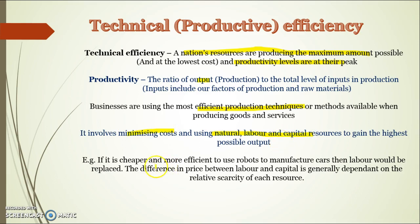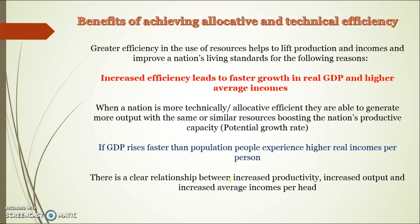For example, if it's cheaper and more efficient to use robots to manufacture cars, then labour would be replaced because it would be more technically efficient to use robots in the production process. The difference in price between labour and capital is generally determined by how relatively scarce the two resources are. Technical efficiency is about maximising output or production per level of input.